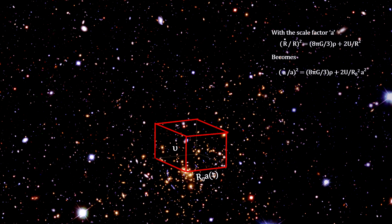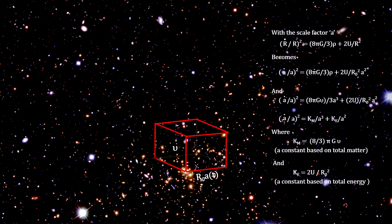Sticking with Newton's model and incorporating the cosmic scale factor, we can rewrite the Friedman equation. We see that the scale factor, A, is the only variable.